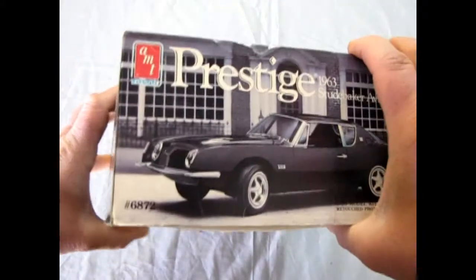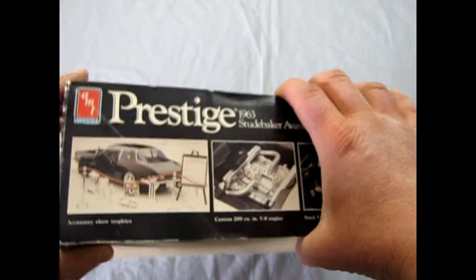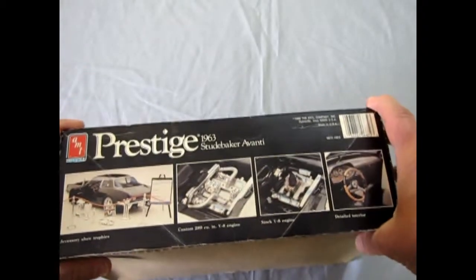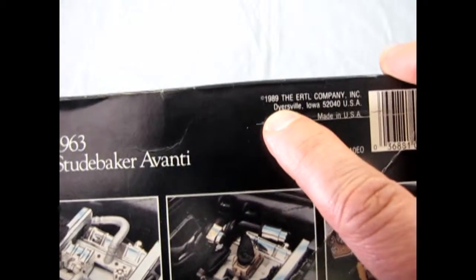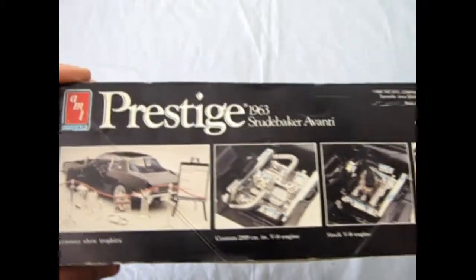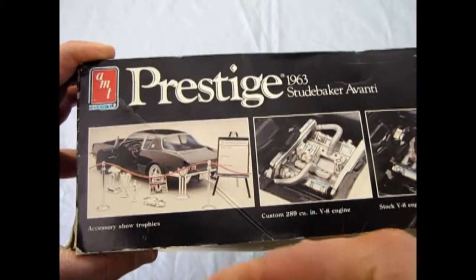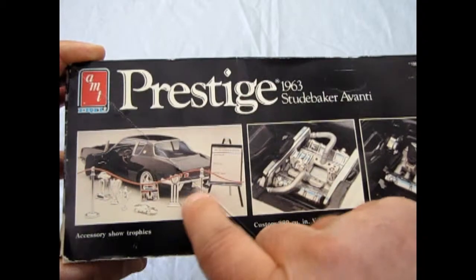Okay anyway. So the side of the box looks like the top of the box, and over here we get to see the prestige features. Now first off, this is from 1989 by the Ertl company. So really cool. And like I said, I have extra parts in here because of that phone call.